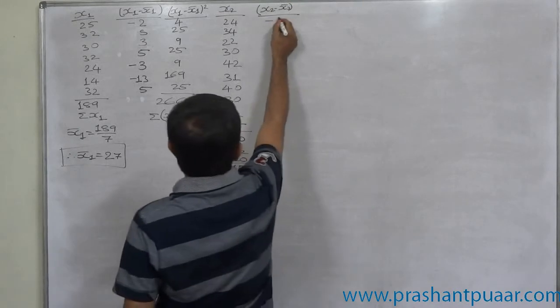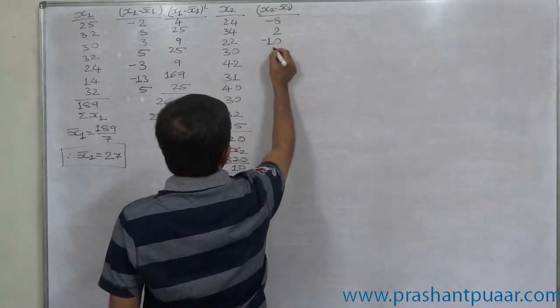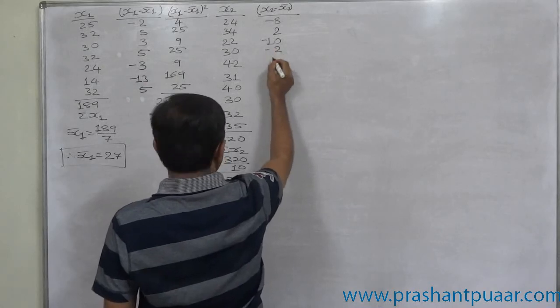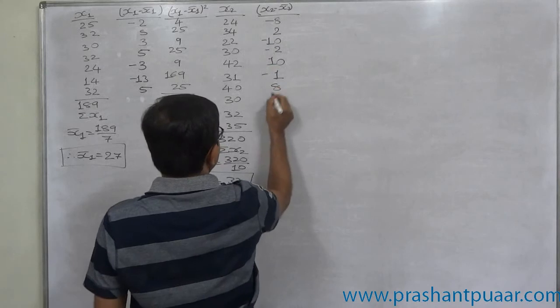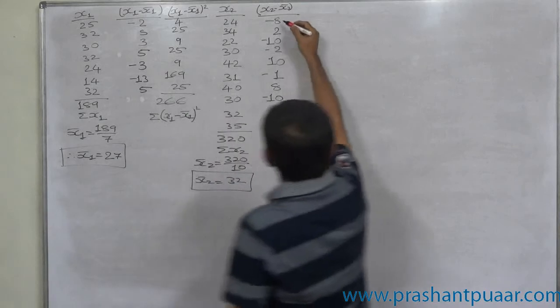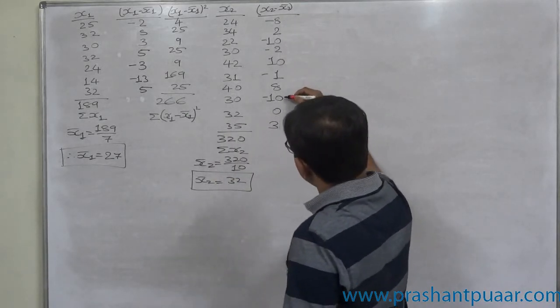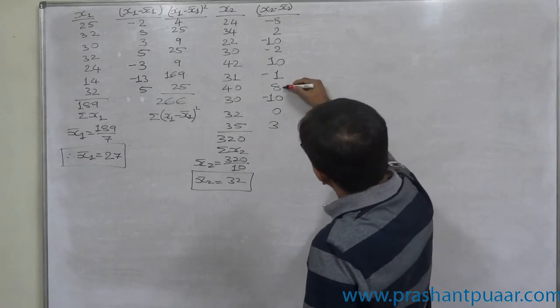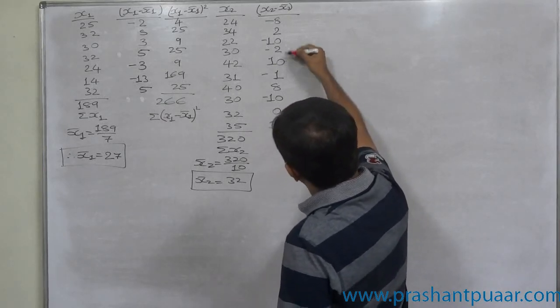24 minus 32 is minus 8, then 2, then minus 10, then minus 2, positive 10, negative 1, positive 8, negative 10, 0, and positive 3.